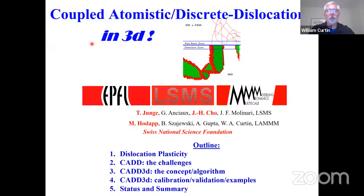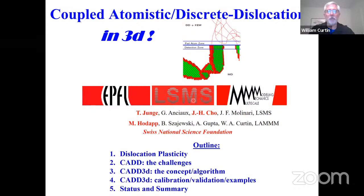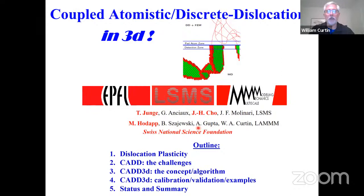This is the coupled atomistic discrete dislocation method in full 3D. Coupling atomistic dislocations, which have complex structure, with continuum dislocations, which are line defects, through some coupling mechanism. This work has been done in collaboration with Jean-François Molinari in the LSMS lab, his student Jae-Hoon Cho, postdoc Chil-Yunga, PhD student Max Hodap, Ben Shaevsky, and Ankit Gupta who came from IIT Madras and is working with me now on the next generation. It's funded by the Swiss National Science Foundation.